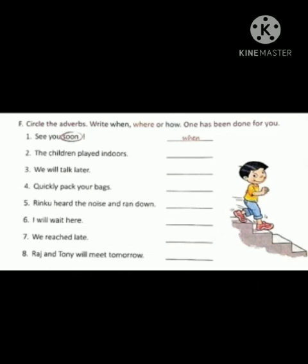Next one: 'The children played indoors.' Here 'indoors' is the adverb, and it is the adverb of place. So you have to write 'where'. Now, 'Quickly pack your bag.' Here 'quickly' is the adverb, and it is the adverb of manner. So you have to write 'how'.